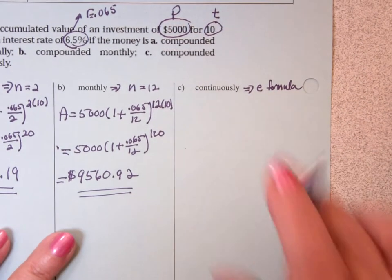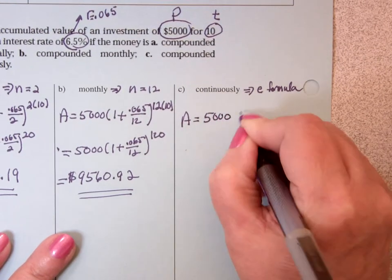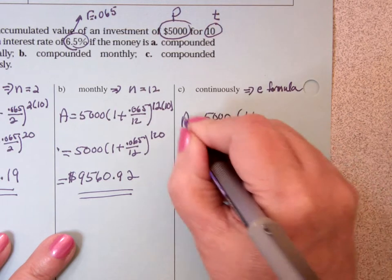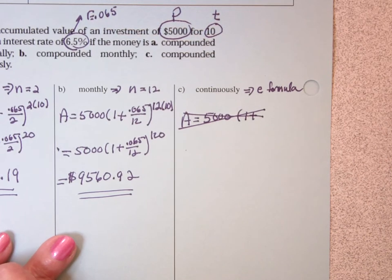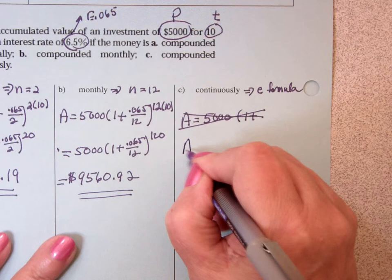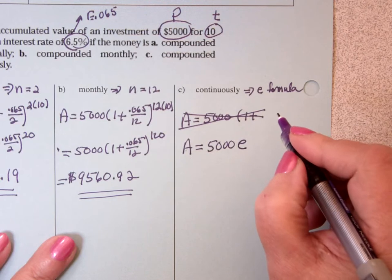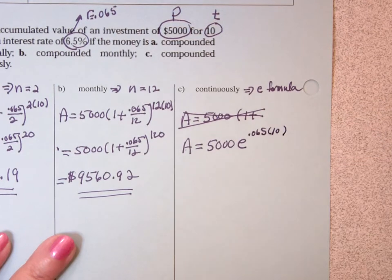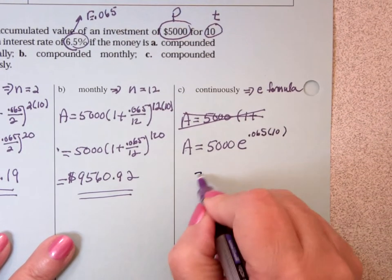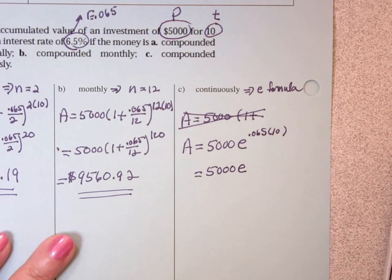Continuous is the E formula. So A is 5,000 times E raised to the R, which is .065 times T, which is 10. Again, I'm going to multiply that exponent. So it's 5,000 E to the 0.065 times 10 is .65.